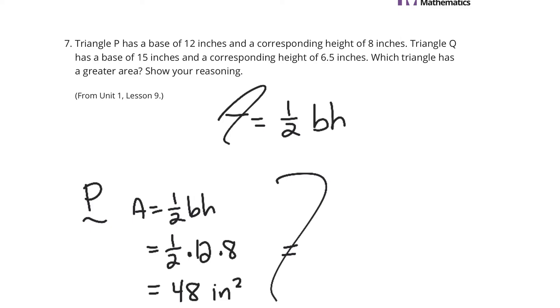If we look at Q, again, area equals 1/2 base times height. So, that means we're going to take a half of 15 and multiply it by 6.5. And when we do that, a half of 15 times 6.5 is going to be 48.75 square inches. And so, Q has the larger area.